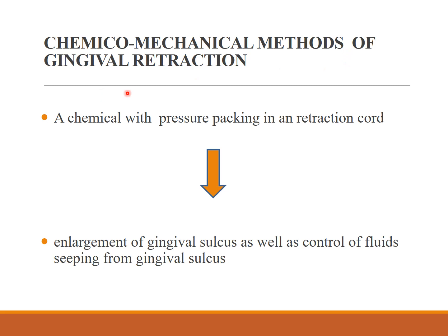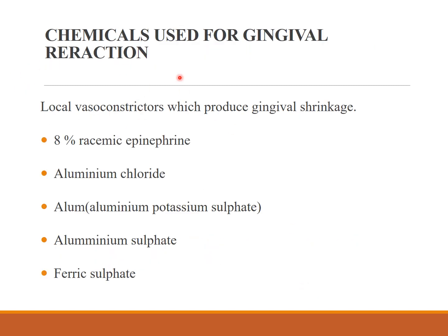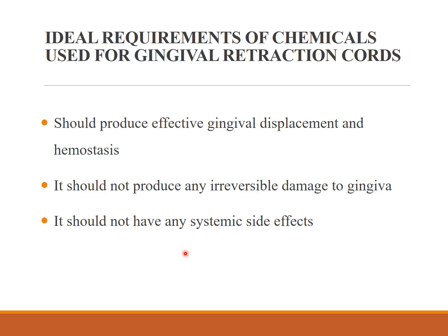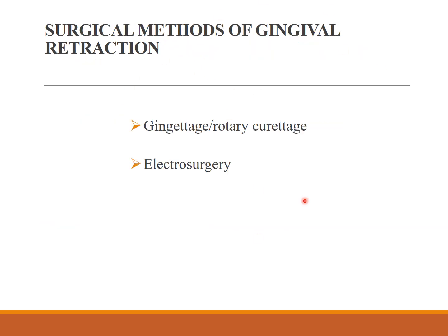In the chemical-mechanical method of gingival retraction, the retraction cord is dipped into a chemical, resulting in enlargement of the gingival sulcus as well as control of fluids seeping from the gingival sulcus. Chemicals used are local vasoconstrictors including epinephrine, aluminum chloride, and aluminum sulfate. Ideal requirements are that the chemical should produce effective gingival displacement and hemostasis, without irreversible damage to gingival tissue, and without systemic effects.